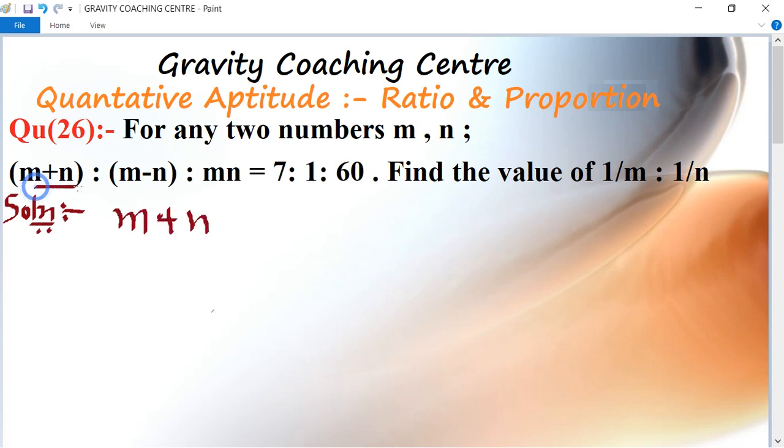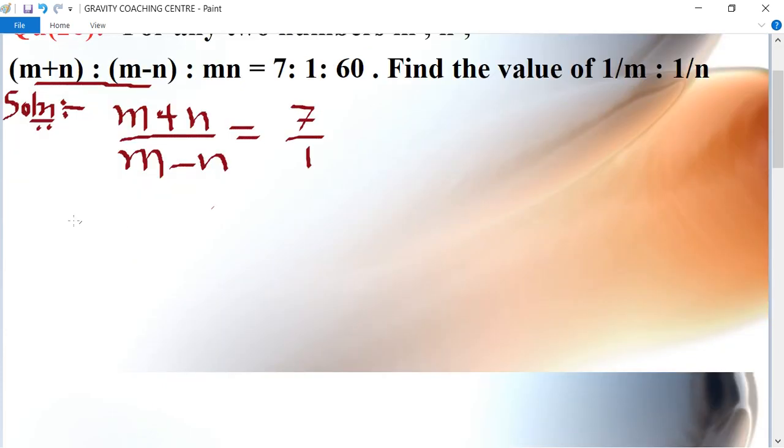First we take the first two parts, m plus n and m minus n, so 7 is to 1, and after applying componendo and dividendo.